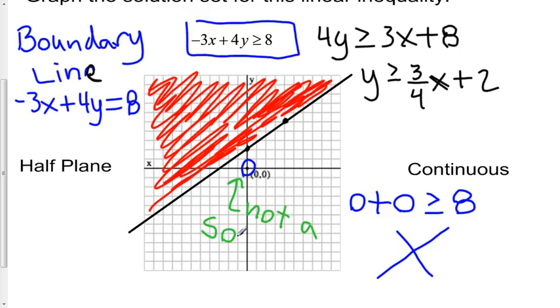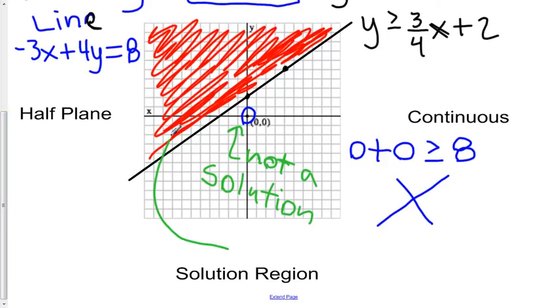And your solution region is either on one side or the other of the boundary line, not both. So it's not a solution. Which means that my solution region must be on the other side. And so we were correct when we intuitively looked at this and said, well, y is greater than or equal to this line. Therefore, it must be up here. So there is our solution region.